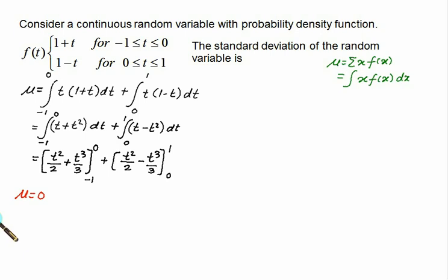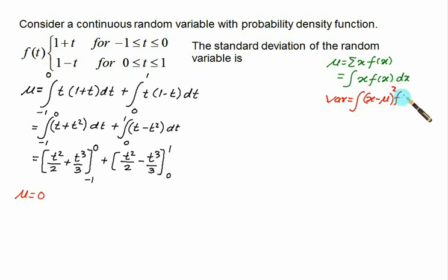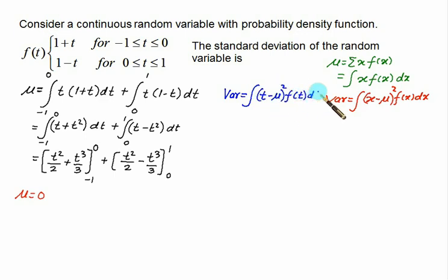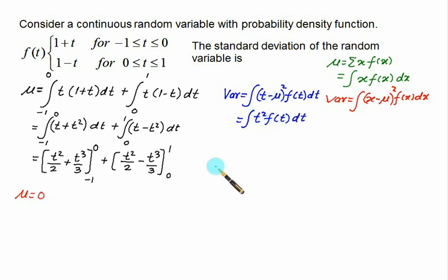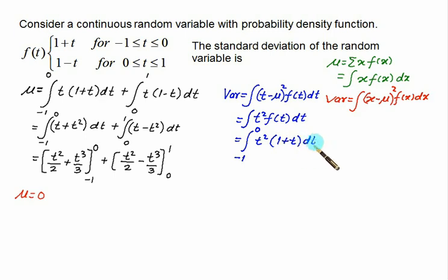With μ = 0, recall that variance = integral of (x − μ)² · f(x) dx. Since μ = 0, this simplifies to integral of t² · f(t) dt, which we split into two parts: integral from −1 to 0 of t²(1+t) dt plus integral from 0 to 1 of t²(1−t) dt.